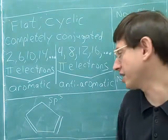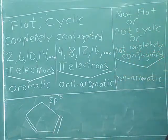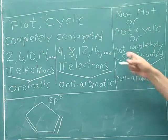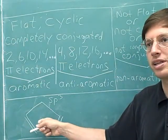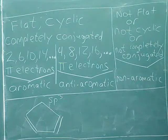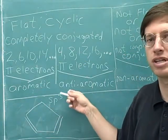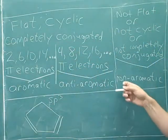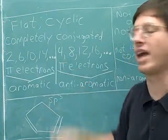This molecule is not completely conjugated — it's only partially conjugated. Down here on these four atoms we have overlapping p-orbitals, but our definition requires completely conjugated. So this molecule is not completely conjugated, which means it's non-aromatic. Notice we didn't even have to count the pi electrons. You only need to count pi electrons if the molecule is completely conjugated and cyclic. If it's not completely conjugated, it's automatically non-aromatic.